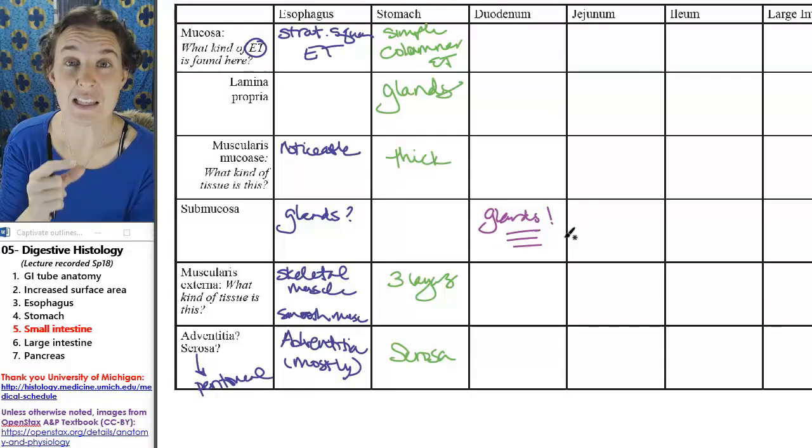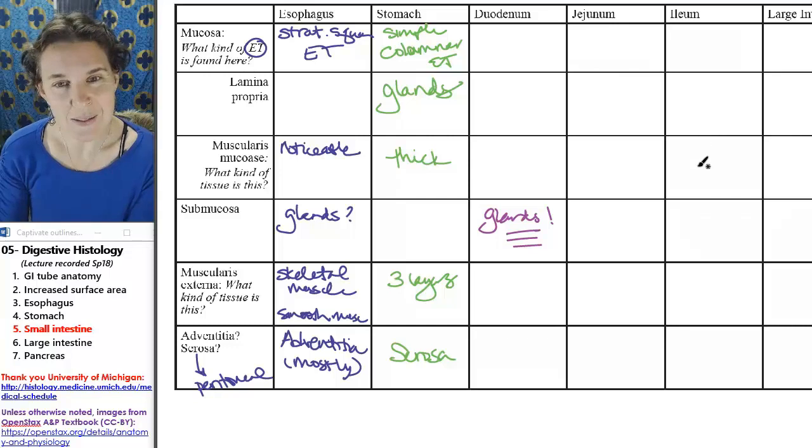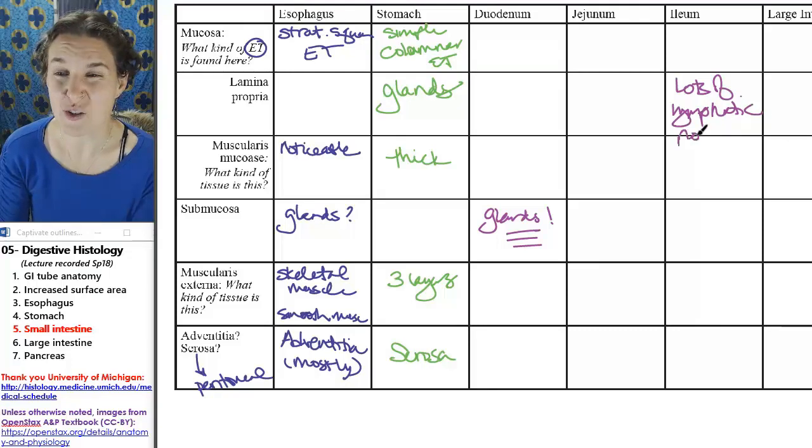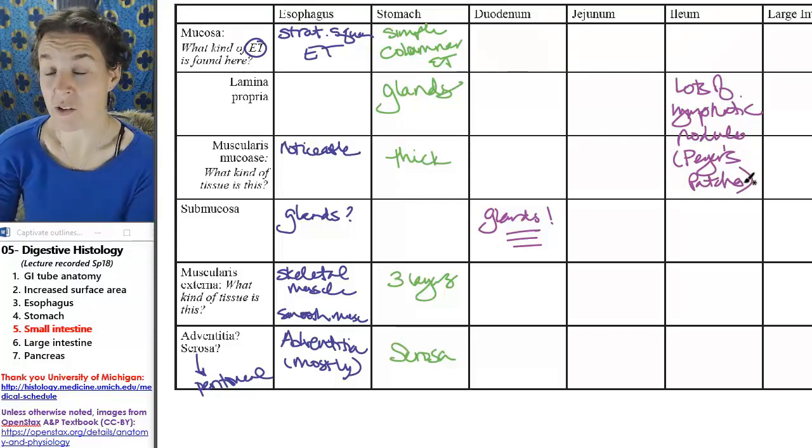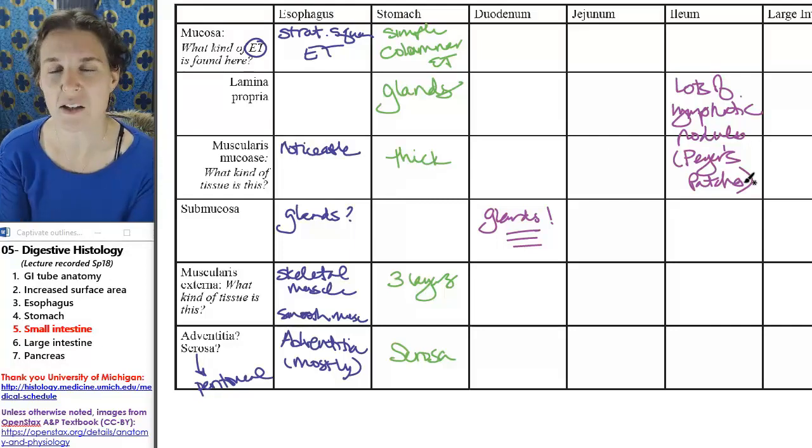The ileum has lots of lymphatic nodules in the submucosa or lamina propria, and they have a special name in the ileum. They're called Peyer's patches. I don't know why they're called something special there, but they're just lymphatic nodules. But if you see a whole bunch of them, chances are you're in the ileum.